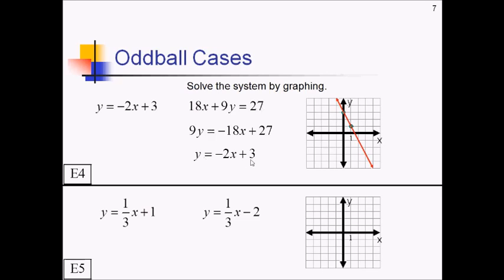Why? They gave us the very same line in disguise. So if you have one line on top of another, if you have the same line, then you actually have not one solution, not 2, not 3, an infinite number of solutions because the lines touch everywhere.